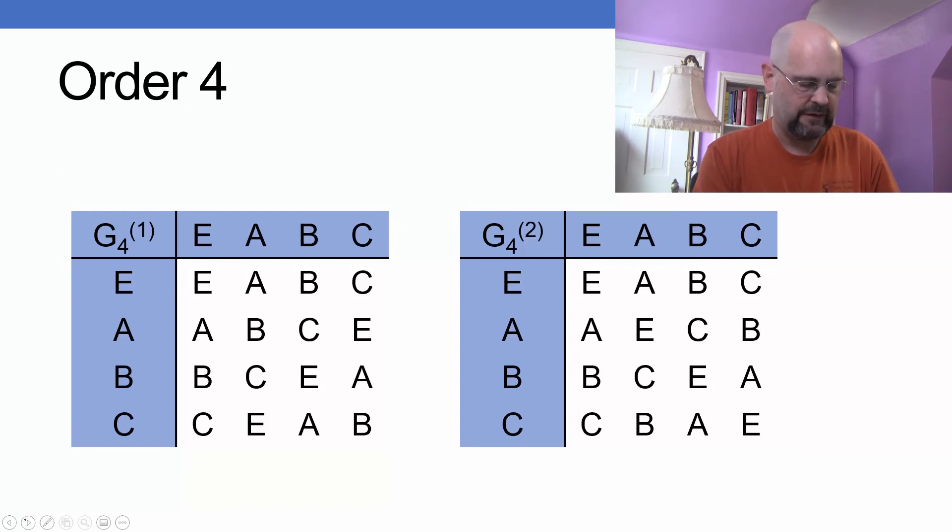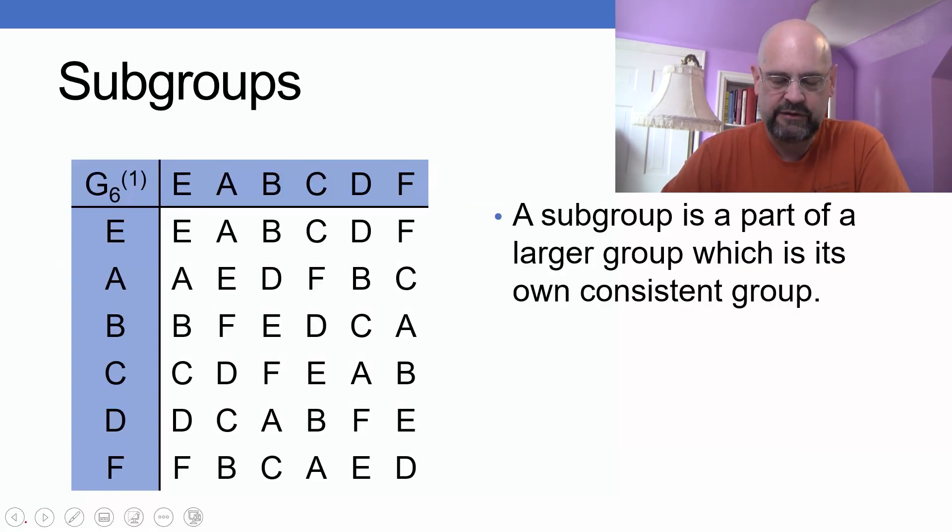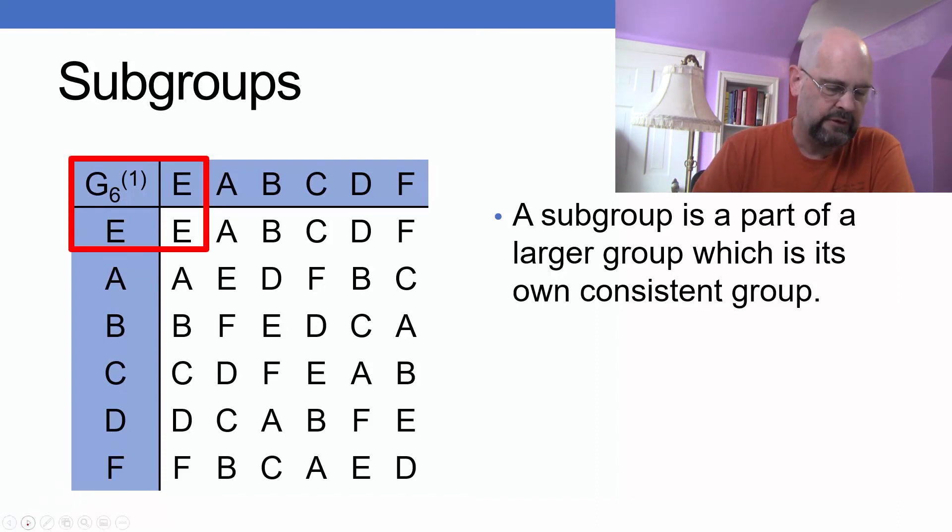The last concept is the idea of subgroups. A subgroup is part of a larger group, which is its own consistent group. So we've got this one first. You can see the sort of redundant first order. E times E is E, and there are molecules where all I have is E. Actually, it's C1, so maybe not E.